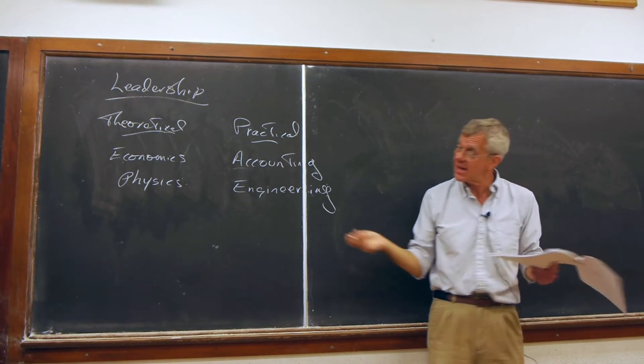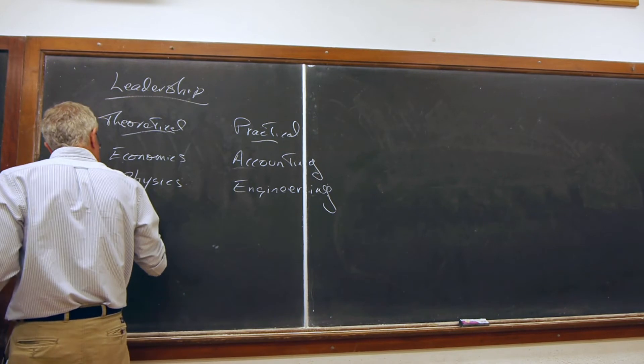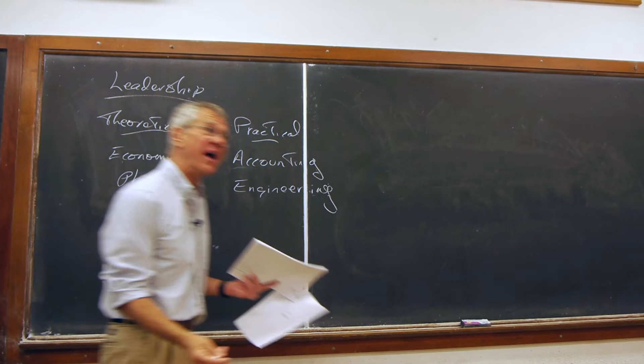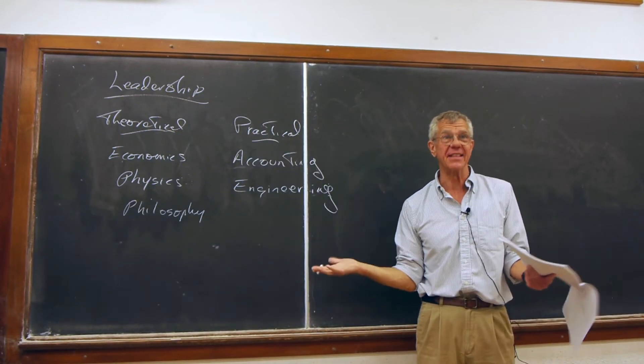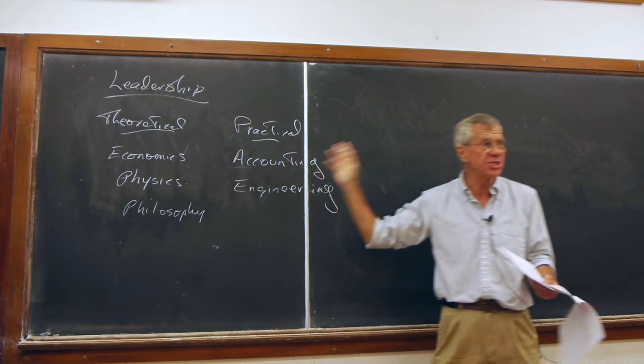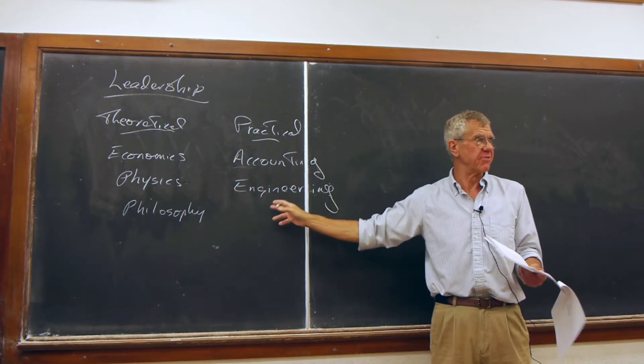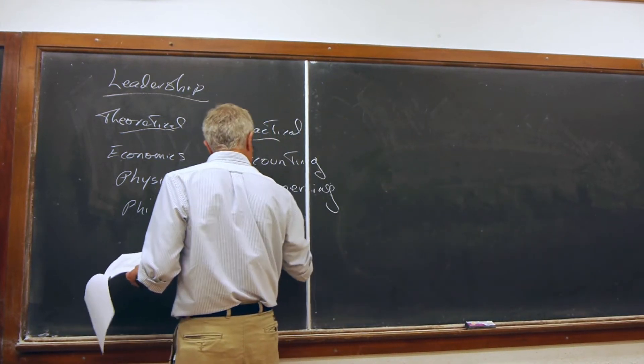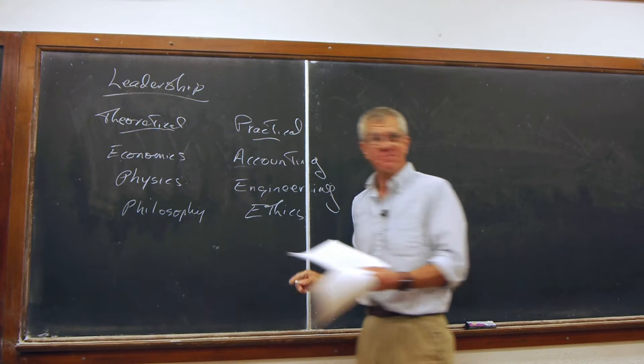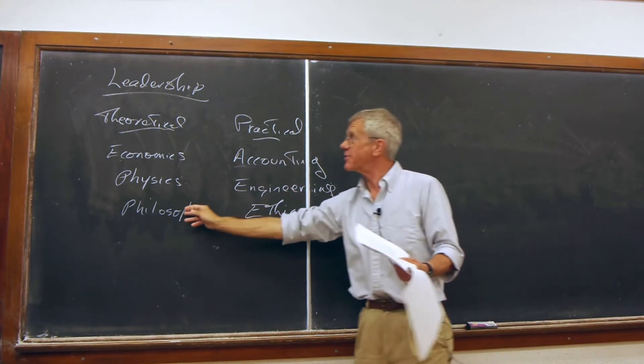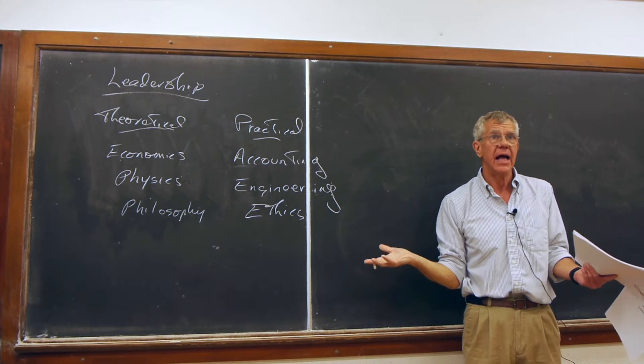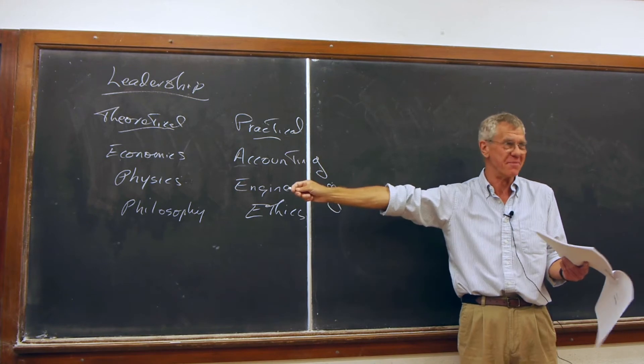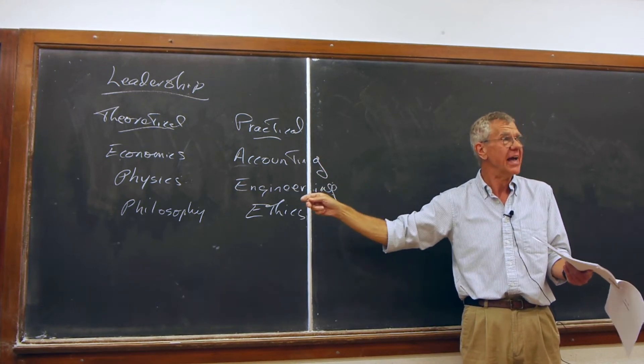What are some other examples of theoretical disciplines? Philosophy seems pretty theoretical, right? At least most branches of philosophy are. For example, metaphysics, the theory of knowledge, those seem highly theoretical. Logic. On the other hand, some parts of philosophy are practical. Like what? Ethics. Most of philosophy belongs over here, but ethics is very practical.